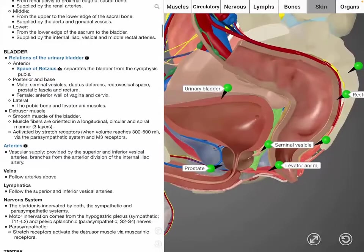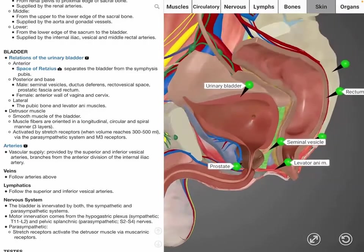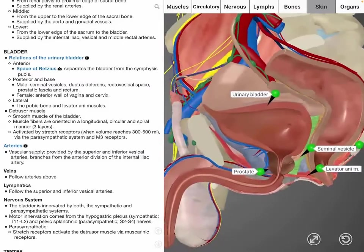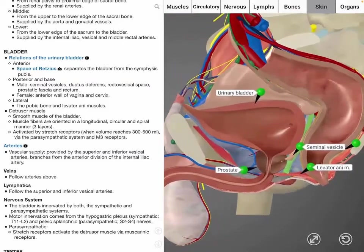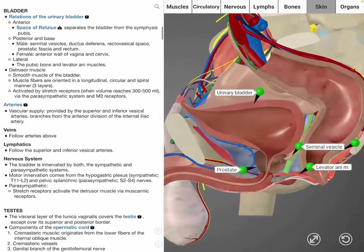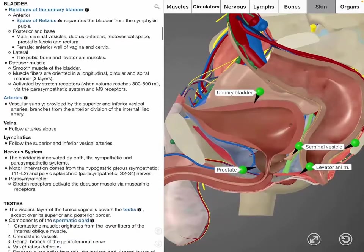The smooth muscle of the bladder is known as the detrusor muscle. The detrusor muscle is activated by stretch receptors to help the bladder contract in order to assist with bladder emptying. It is activated by the parasympathetic nervous system and M3 muscarinic receptors, whereas it is inhibited by the sympathetic nervous system and beta-3 adrenergic receptors.